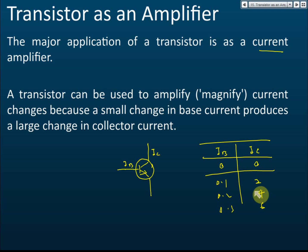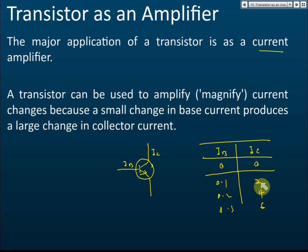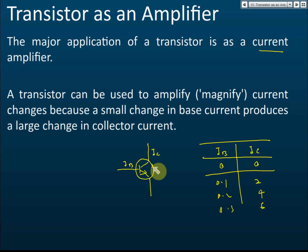When IB increases, IC increases. A small change in base current produces a greater change in the collector current. When IB increases from 0.1 to 0.3, IC increases from 2 to 6 A. So we give a small current in the base circuit and produce a large current in the collector circuit — small current in, large current out. This is how a transistor amplifies current.